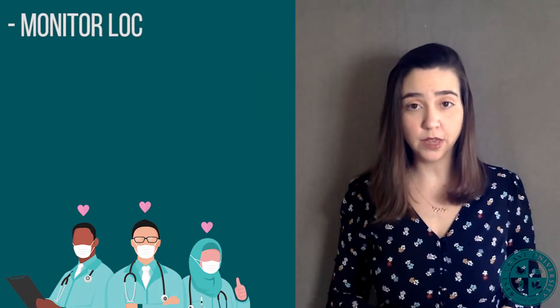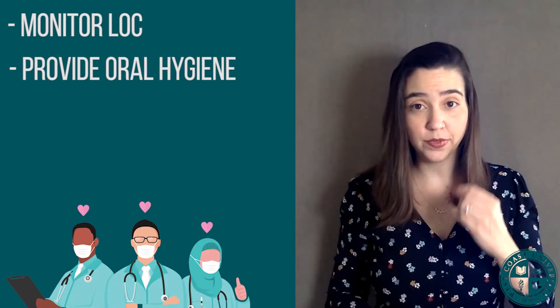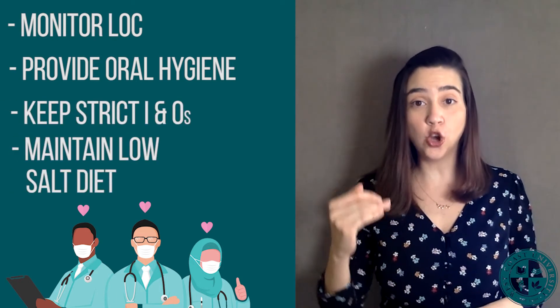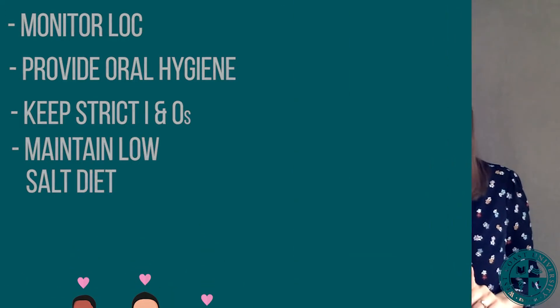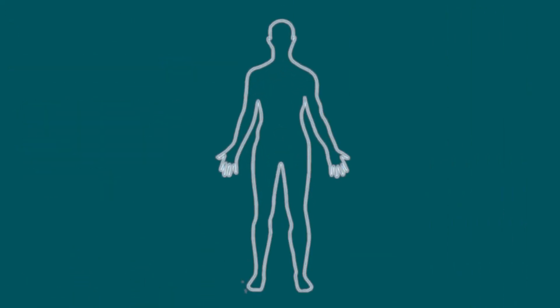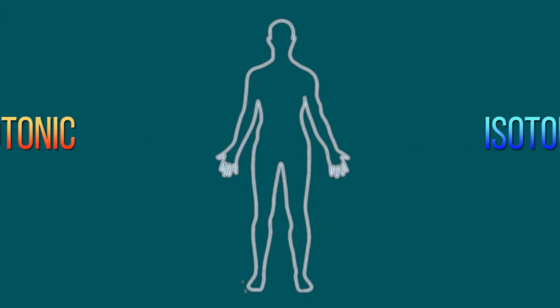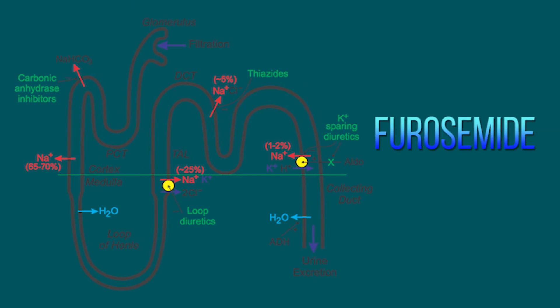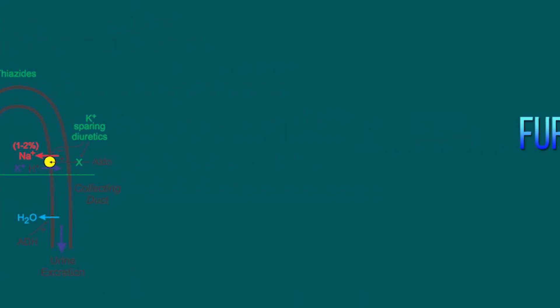What is our nursing care for this client? We need to monitor LOC, provide oral hygiene, and keep very strict I&Os. We need to maintain a low-salt diet. If the hypernatremia is due to fluid loss, we can treat with either a hypotonic or an isotonic fluid. If the hypernatremia is because of excess sodium, we want to use a loop diuretic such as furosemide, always assessing that the client's renal status is within normal limits.